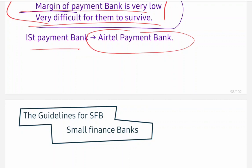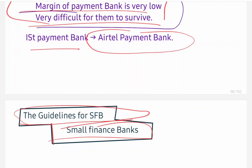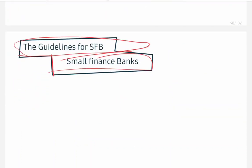Now let's see guidelines for Small Finance Banks (SFBs). RBI issued guidelines in November 2014 for setting up SFBs. There was also an amendment in 2019, and most recently an amendment in 2021. The first guideline: minimum capital investment — which was initially 100 crore, then increased to 200 crore, and currently stands at 300 crore rupees to open a Small Finance Bank.